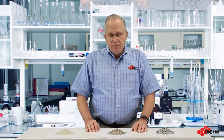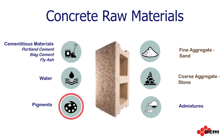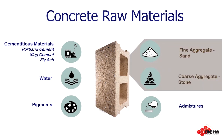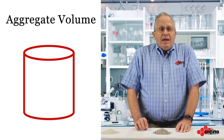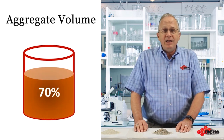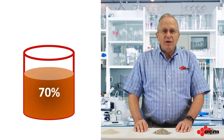Welcome to Concrete 101. Today we're going to talk about one of the most important raw materials that we use in our concrete mix. Our concrete is made up of a variety of materials, including cement, water, pigment, admixtures, and aggregates, or sand and stone. So why are aggregates so important? The main reason is that they make up the vast majority of our mix — up to 70 to 80 percent of our concrete mix by volume.